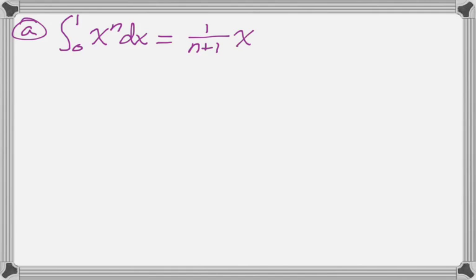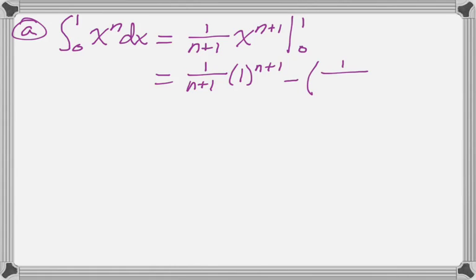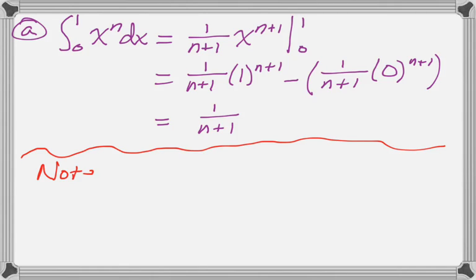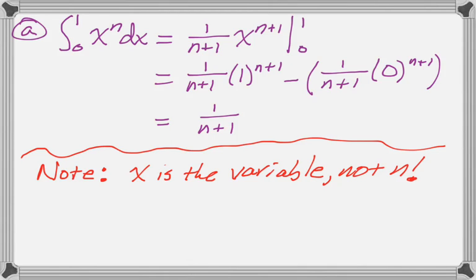Using the reverse power rule, we get that expression. I have to evaluate it at 0 and 1 — evaluate at 1, then subtract the evaluation at 0, and simplify. That's really all there is to it. There's one little thing people occasionally screw up on problems of this sort: x is the variable, so that's what you evaluate at — don't try to substitute in for n.